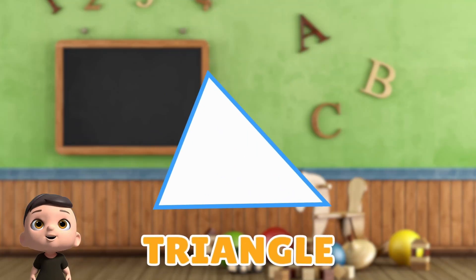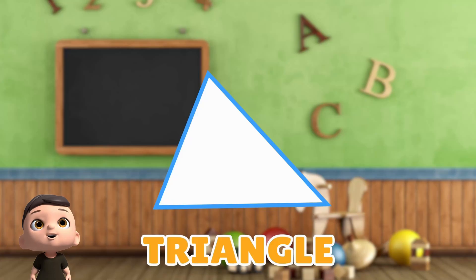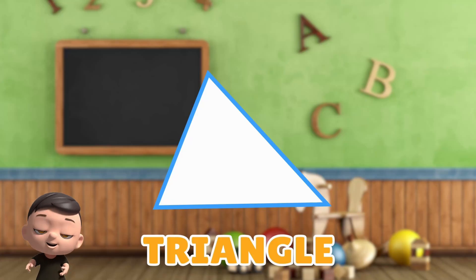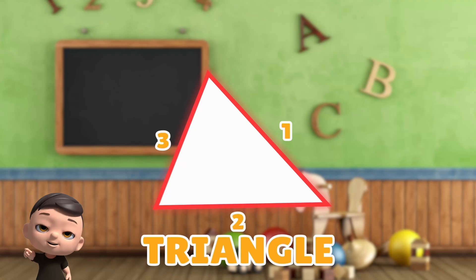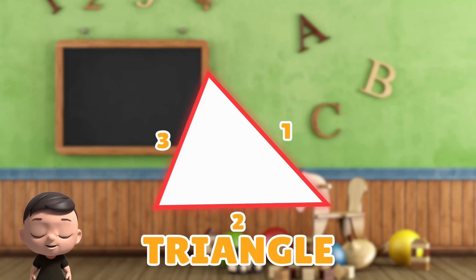This is a triangle. Let's see how many sides a triangle has. 1, 2, 3. Triangle has 3 sides.